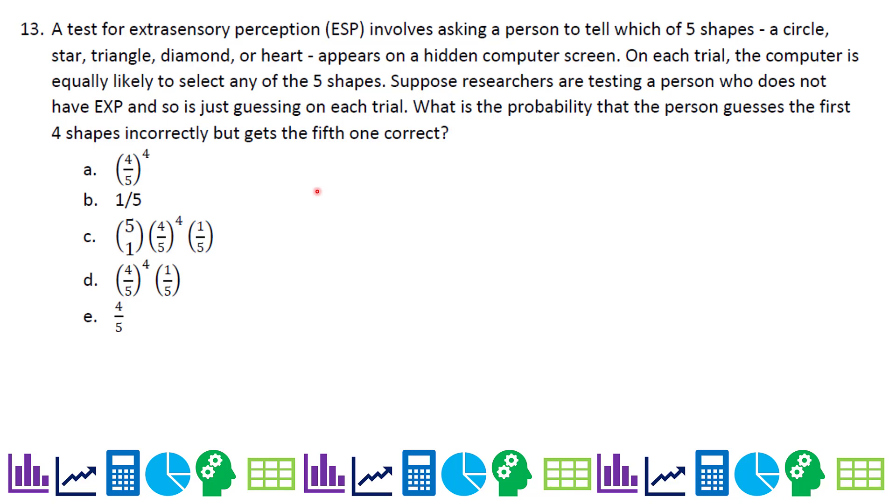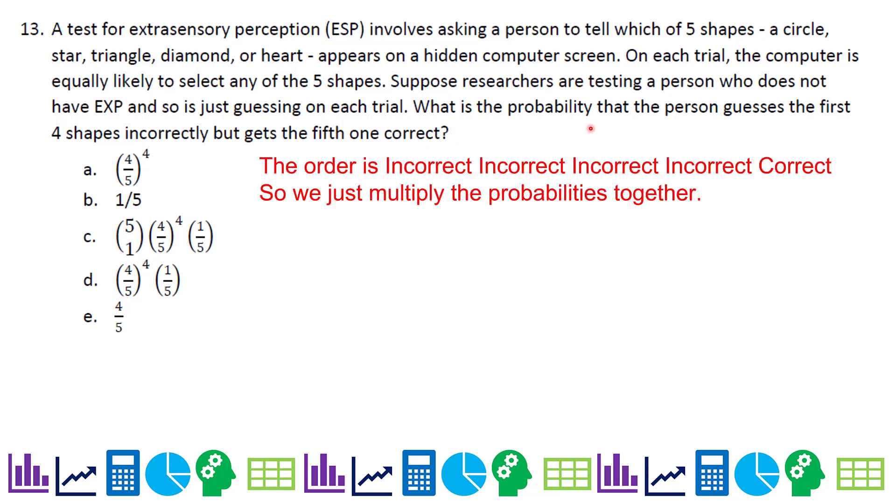Number 13, a test for extrasensory perception, ESP, involves asking a person to tell which of five shapes, a circle, star, triangle, diamond, or heart, appears on a hidden computer screen. On each trial, the computer is equally likely to select any of the five shapes. Suppose researchers are testing a person who does not have ESP and so it's just guessing on each trial. What is the probability that the person guesses the first four shapes incorrectly, but gets the fifth one correct? You don't have to worry about binomial here because they're doing the order exactly. They're telling you incorrect, incorrect, incorrect, incorrect, correct. So we're talking about just one way to get this. I basically do the probabilities for incorrect four times, not times four, but listed four times, and then one fifth is the last thing. So that's four fifths to the four times one fifth. So the correct answer on this one is D.